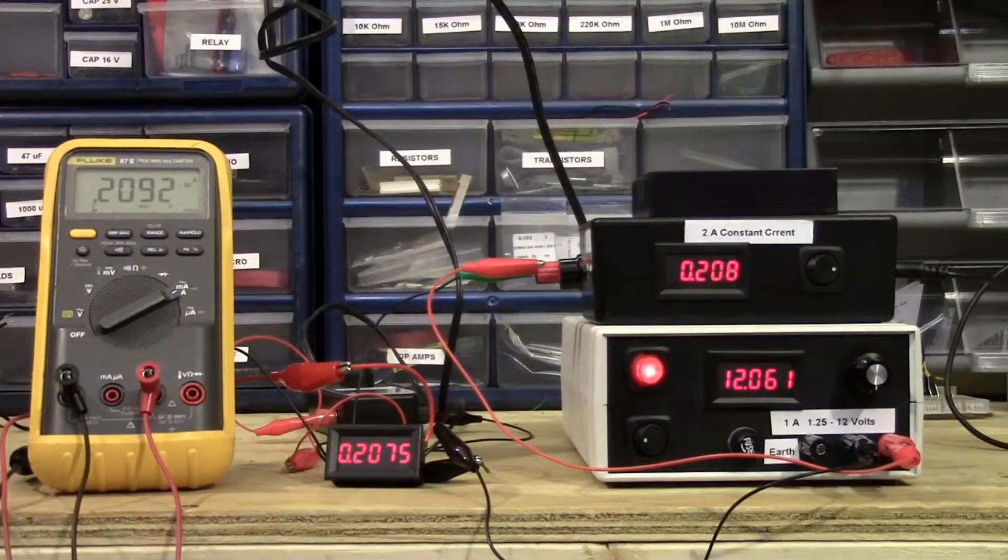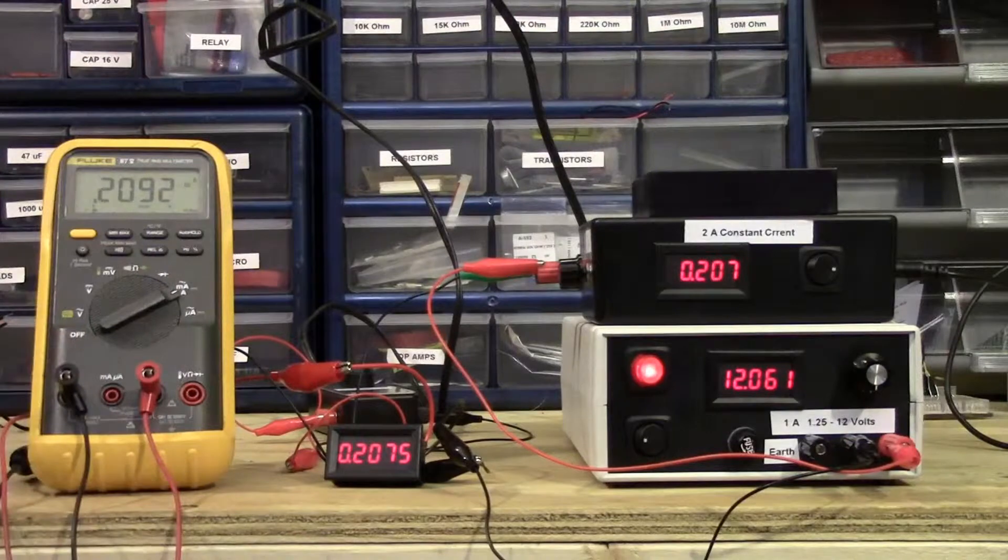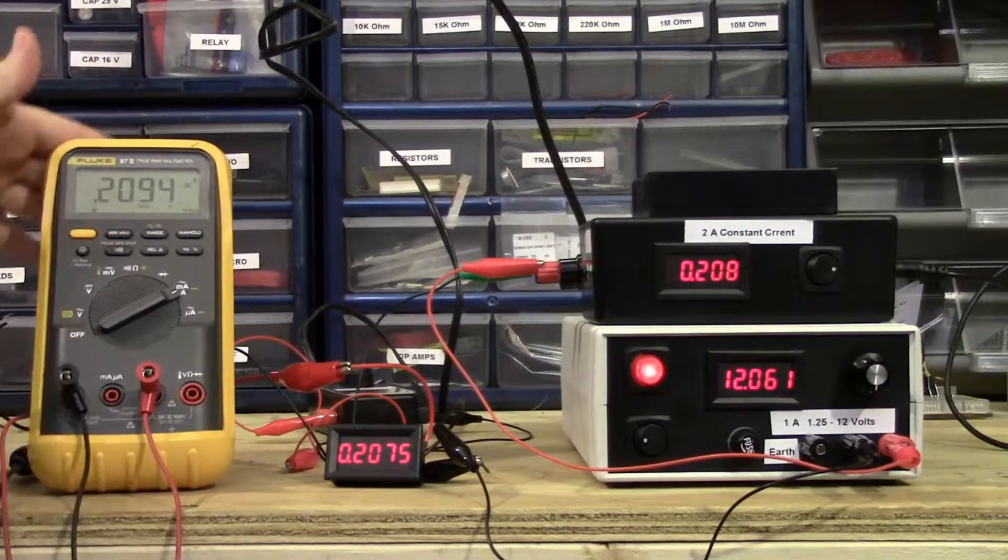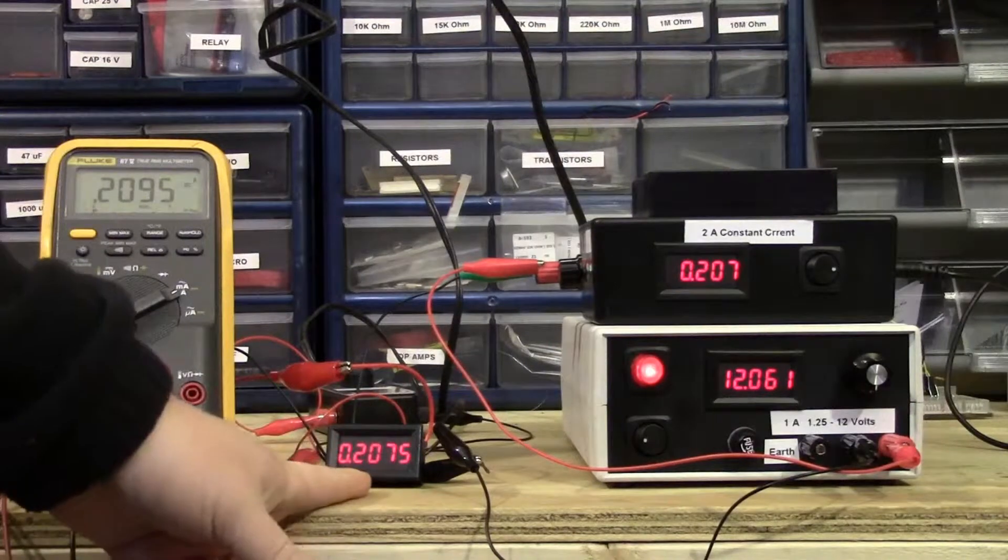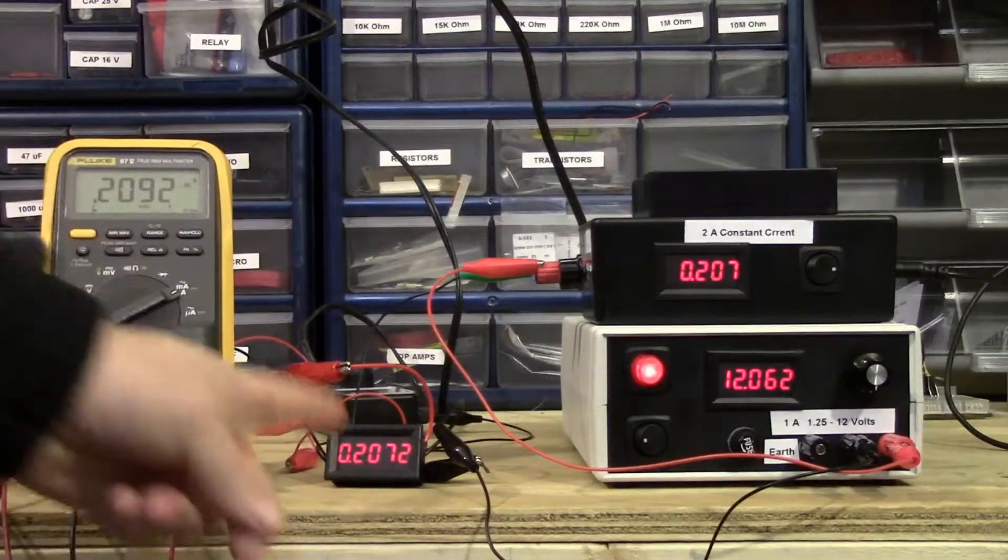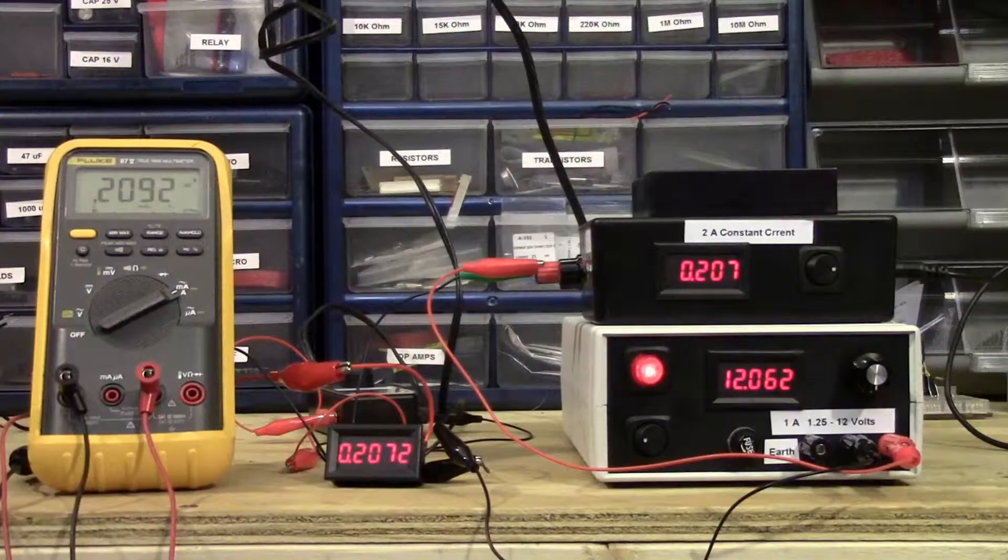Now you can see in this demonstration that our accuracy between a very expensive kind of high-end Fluke multimeter and the panel meter that I've chosen here is within two milliamps of each other.